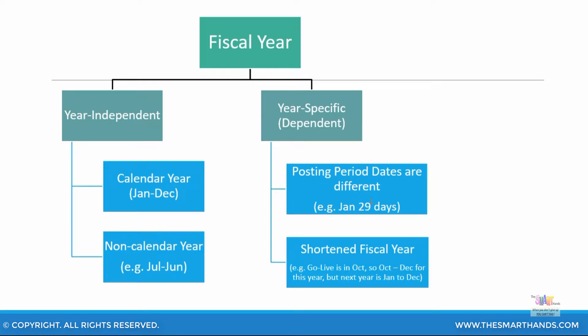Year specific or year dependent is very rarely used and is done in two exceptional circumstances. One is when the posting dates are different — for example, if your organization says the last Friday of that particular month should be the last day of posting, then January can have sometimes 29 days or even 26 days. If the last Friday falls on January 26th, in January you will have only 26 days for your posting dates, and if you want to post January 27th it will go to the next period. Some organizations do this where they have shortened dates for each month.